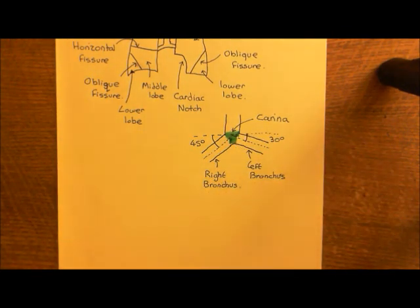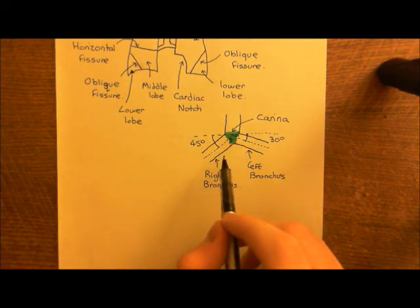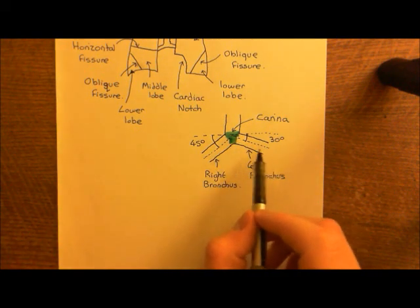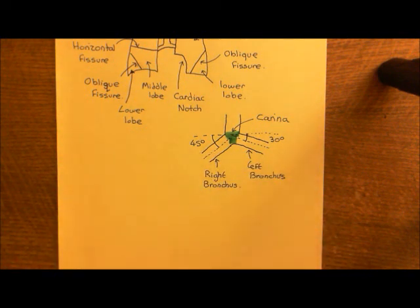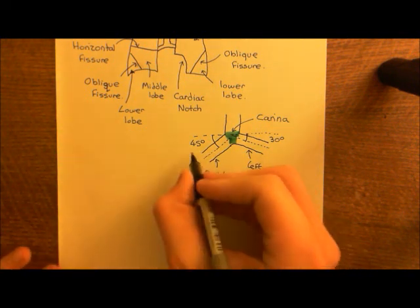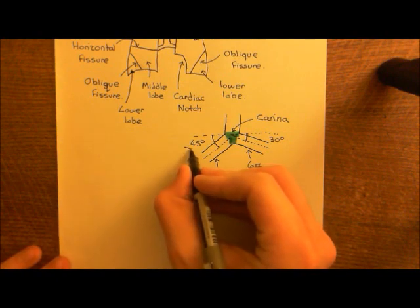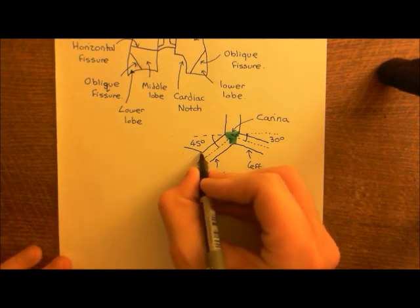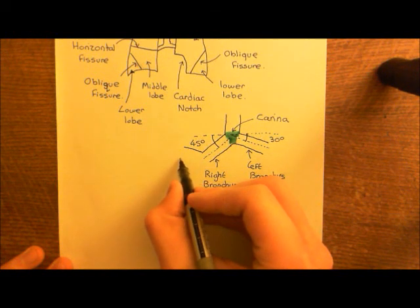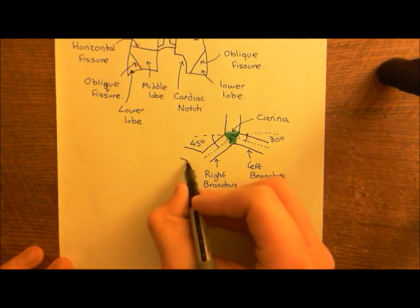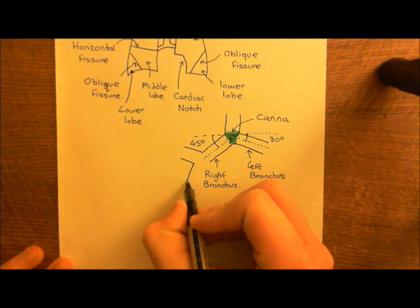Now let's begin talking about the tracheobronchial tree. We'll use the picture we've already got here. What happens is that the right bronchus, once it gets into the lung, starts to bifurcate into two - it splits into two separate branches.